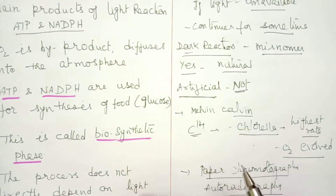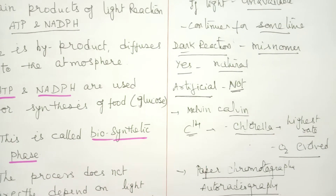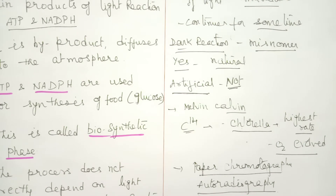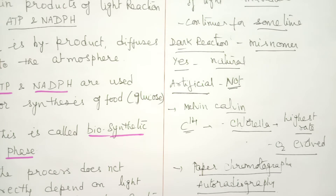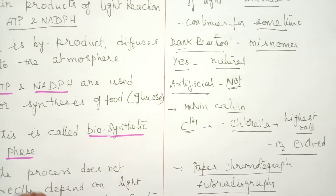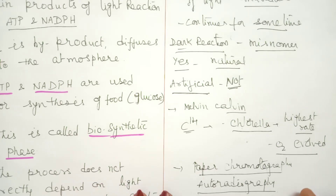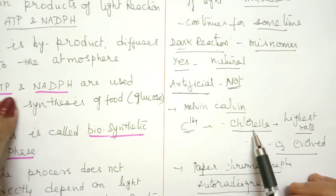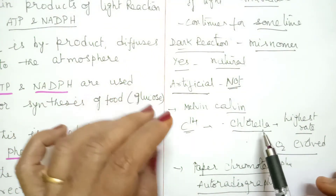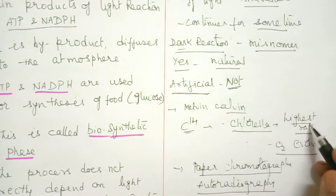Melvin Calvin made a very important contribution in explaining all the reactions of the dark phase. He got the idea of studying the dark phase after World War II, when many radioactive isotopes were released into the atmosphere and he wanted to find use for them. By using radioactive isotopes — specifically C14 — and the alga Chlorella, he studied the pathway of the dark reaction. Chlorella is used most commonly because of its highest rate of photosynthesis.